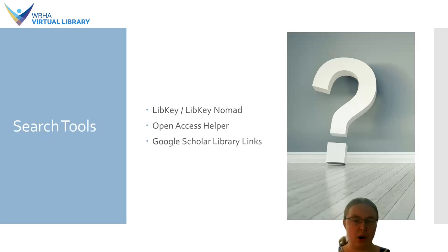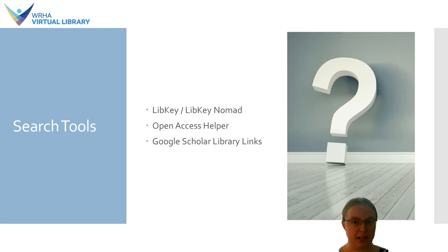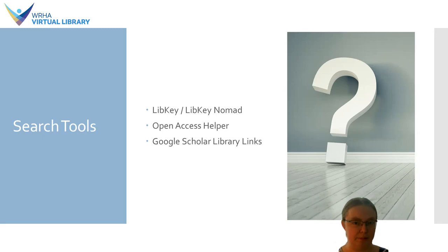Our next category is search tools — these are designed to help simplify the process of getting access to resources. LibKey is a web-based tool where you enter a DOI (digital object identifier) or a PMID (PubMed identifier) into a search box, and LibKey will search our resources and return a link to the full text if we have it. You can also get a link to the article in context within the journal itself using a connection to Browzine. If we don't have a particular article, it can provide a one-click way of ordering it through our document delivery service.